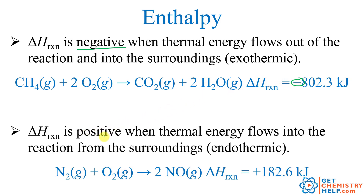If delta H is positive, like in this reaction where the enthalpy of reaction is positive 182.6, that tells us thermal energy is going to flow into the reaction from the surroundings. So when nitrogen reacts with oxygen to form two nitrogen monoxides, this reaction has to absorb energy in order for the reactants to turn into products.